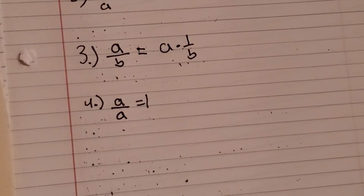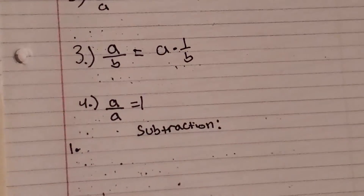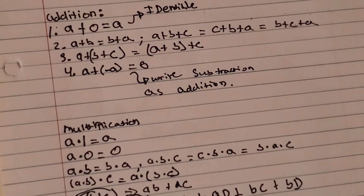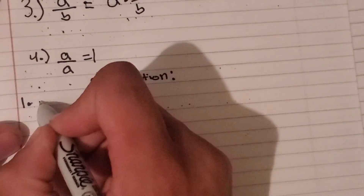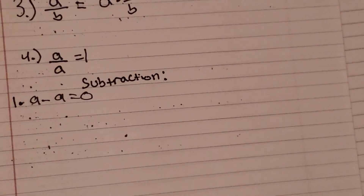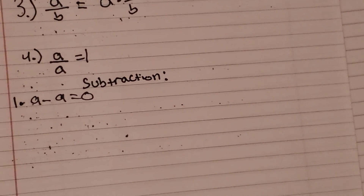The last property we have is subtraction. Looking back at the addition identity property — A plus 0 equals A — we can also see that A minus A equals zero. From here, we could at least guess that addition and subtraction are actually inverses of each other. A very cool idea.